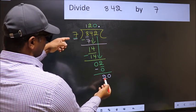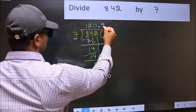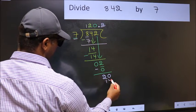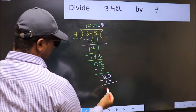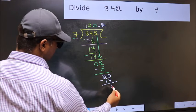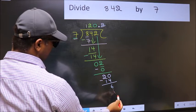So, 20. A number close to 20 in 7 table is 7, 2's, 14. Now, you should subtract. 20 minus 14, 6. And, continue the division.